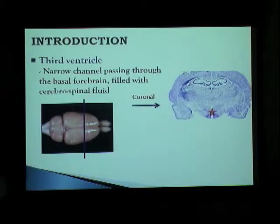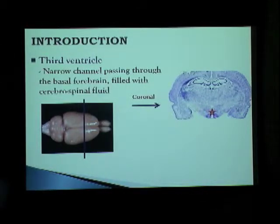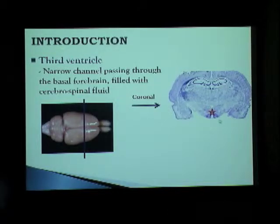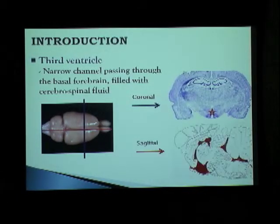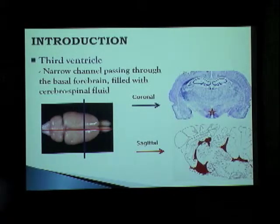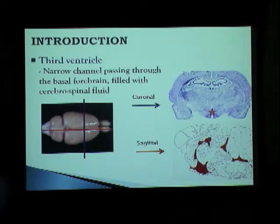This is a rat brain, and if we take a coronal section — that is, if you take a section like this — we get a rat brain section similar to this, and the third ventricle is located where you can see the star. So it's a hollow channel passing through the basal forebrain. And similarly, if you take a sagittal section, we can see how the third ventricle encompasses this entire area, then moves on to form the fourth ventricle and so on.